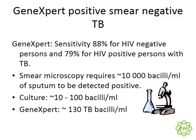GeneXpert is an amazingly sensitive test to find TB in HIV negative patients — about 88%. In HIV positive patients it's lower, at about 79%, but it still means we're going to find most of our pulmonary TB. It's much better than the AFB smear microscopies we used to do, where you would need about 10,000 bacilli to make a diagnosis. Culture is still our gold standard with 10 bacilli, and GeneXpert only needs 130 bacilli to yield a positive result — so it finds most patients, but not everyone.